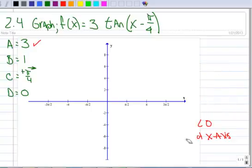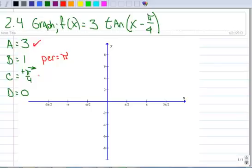So because b is 1, then I know my period has not changed. So I know that the period equals pi. So this is really a pure graph with an amplitude change and a phase shift. So let's go ahead and graph it with a period of pi.